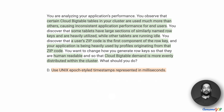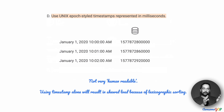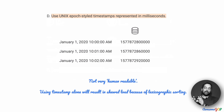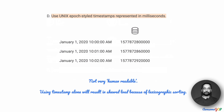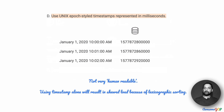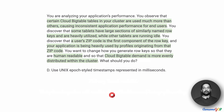Option D suggests using a Unix epoch-style timestamp represented in milliseconds. With data coming in continuously, Unix timestamps are also going to follow an increasing pattern — they are going to be next to each other when lexicographically sorted. So you still have the problem of hotspotting and skewed load. Moreover, the keys themselves are not necessarily human readable in a meaningful way. Therefore, option D is also eliminated.